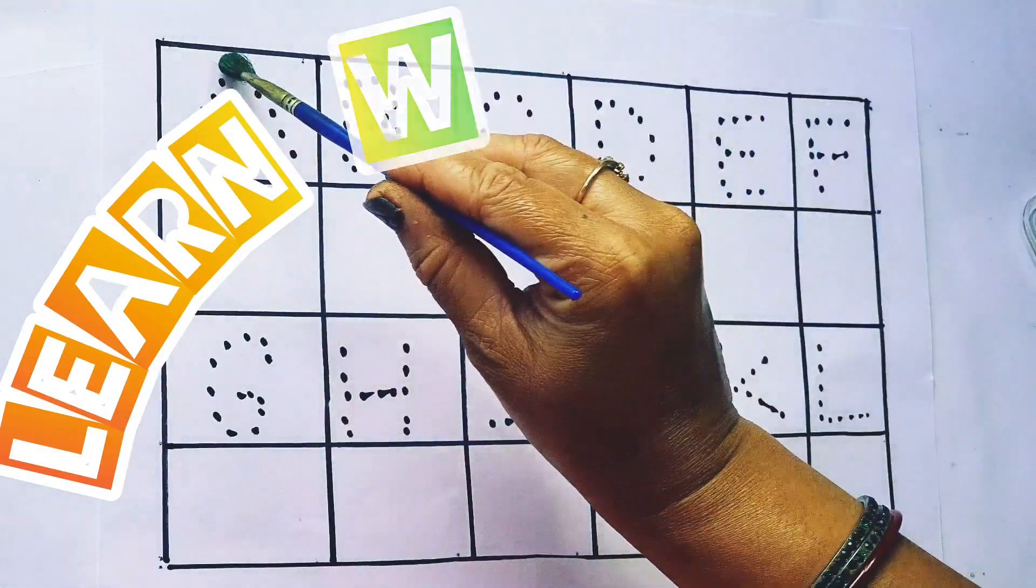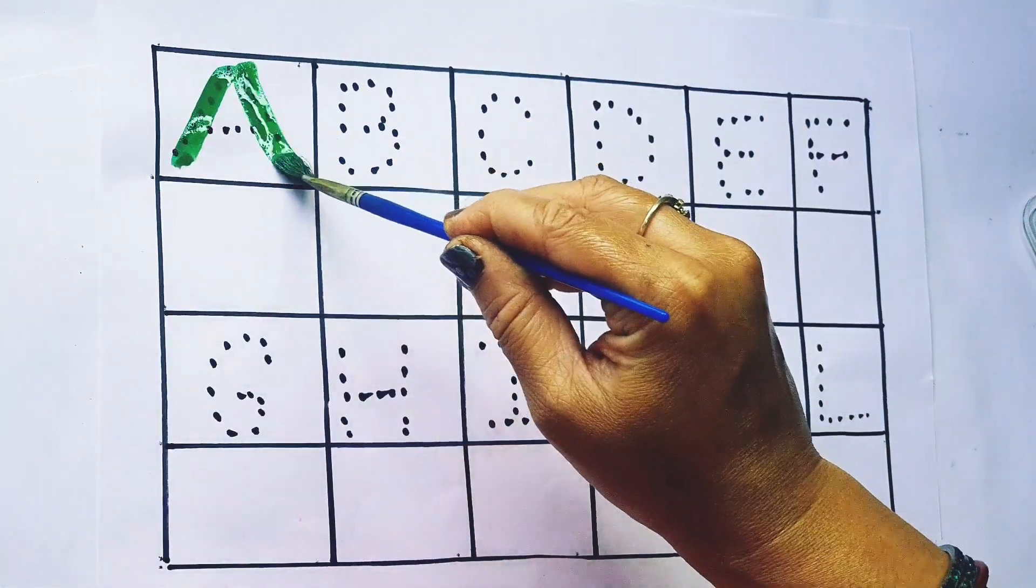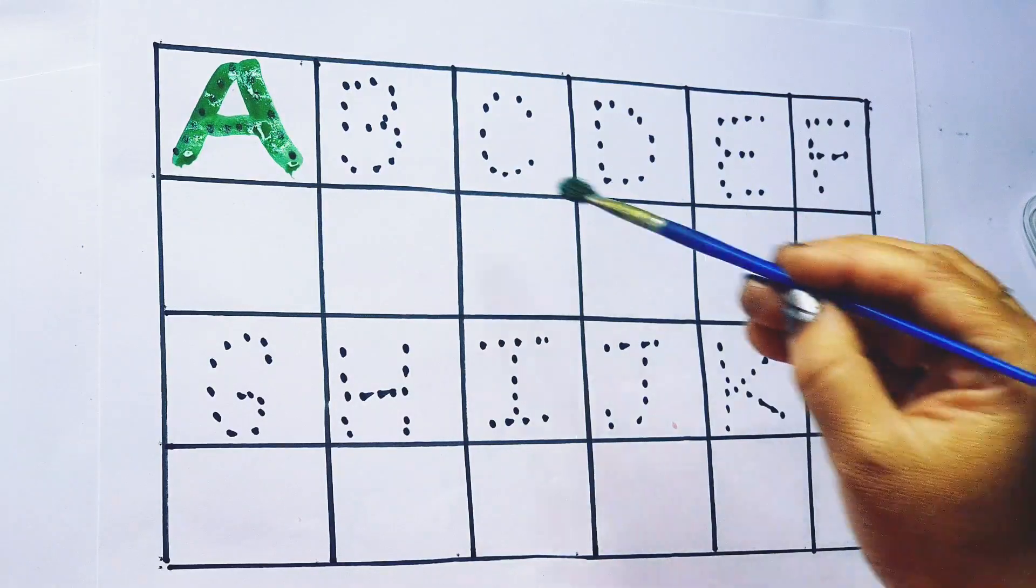Let's start. Green color, A, A for arrow,